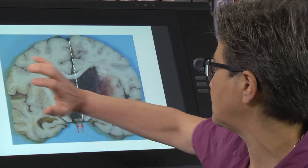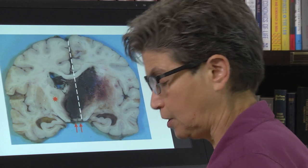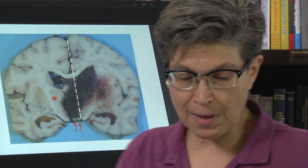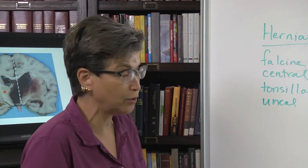The mass effect, the increase in intracranial pressure in one compartment, can be enough that there's a herniation of the brain. There are four types of herniations. Let's go to the board for a moment.